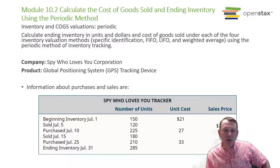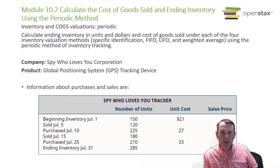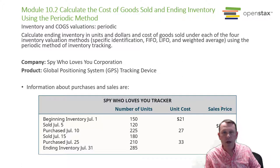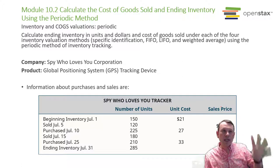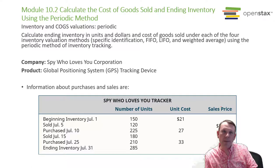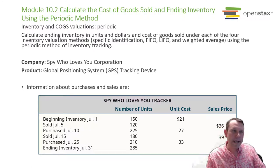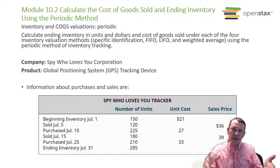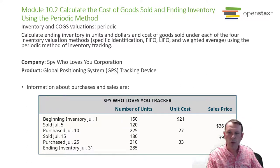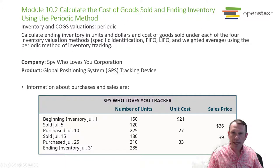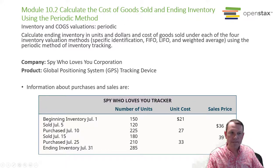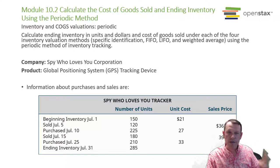We're going to go through these methods with another example — this is the example side. We have the same information as before, with updated sales prices, two sales, and two purchases.